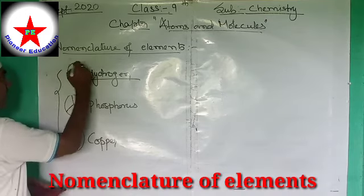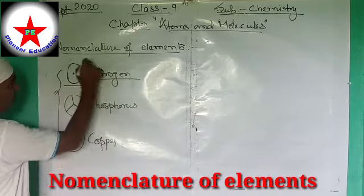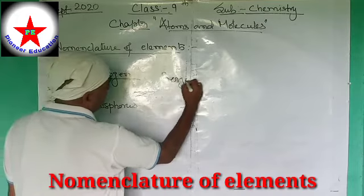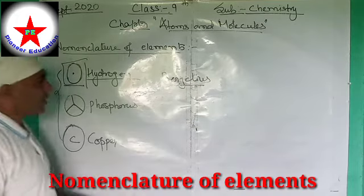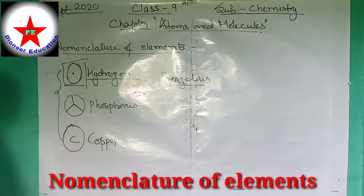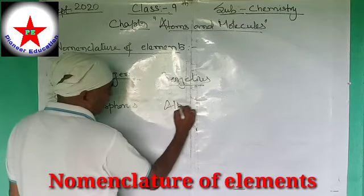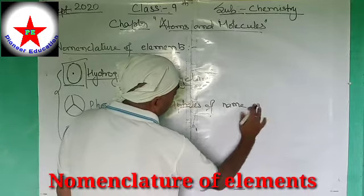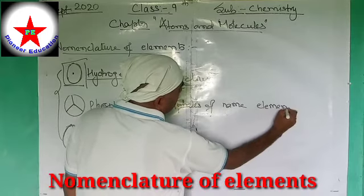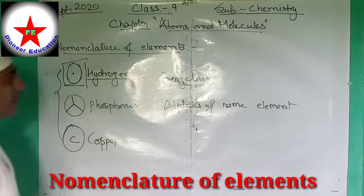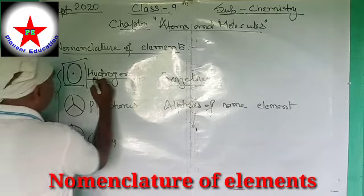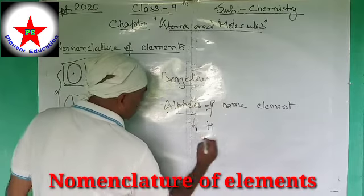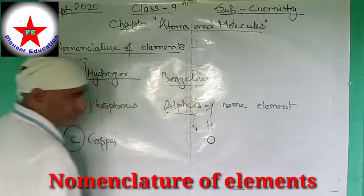Later on, Berzelius used another way to symbolize elements — using the alphabets of the name of the element. For example, in the case of hydrogen it was H, in the case of oxygen it was O, and so on.